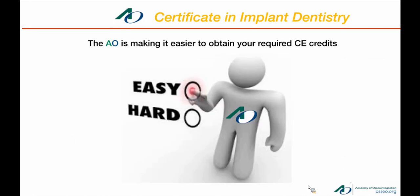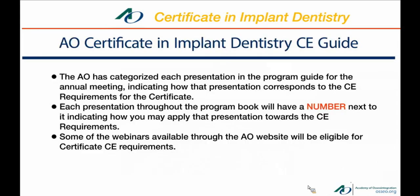The AO wants to make the process easy — we do not want to make this difficult. When you attend an annual meeting, the program guide lists courses, and there are going to be numbers next to each course that indicate in what category the CE credits from that course will be credited towards core or general knowledge in implant dentistry.